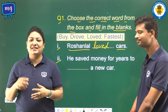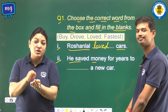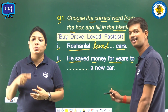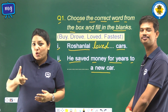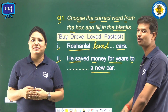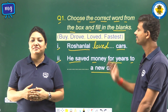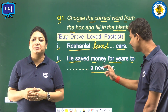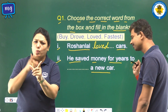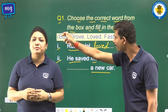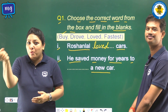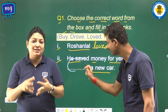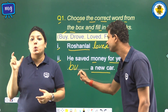Second: He saved money for years to dash a new car. See in the box — he saved money for years to buy a new car. So we shall write 'buy' in the blank.